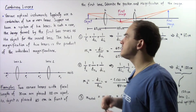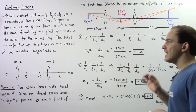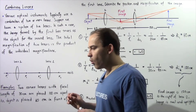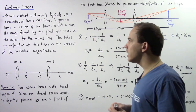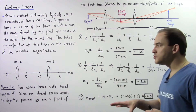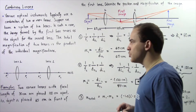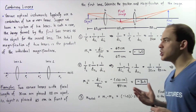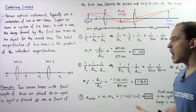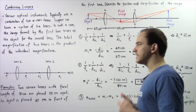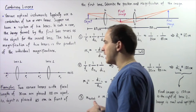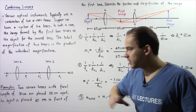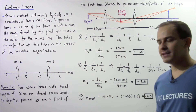Suppose we have a system of two lenses. In such a case, the image that is formed by lens number one serves as the object for lens number two. The total magnification of the two lenses is the product of the individual magnifications of our two lenses. To see exactly what we mean, let's look at the following example.